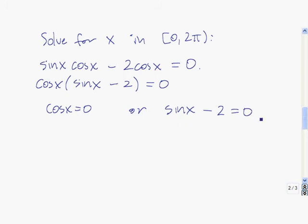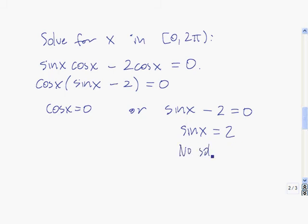The only way that this can be 0 is if cosine of x is 0, or sine of x minus 2 equals 0. We want to isolate the sine of x so it's similar to the problems we were just solving. There are no solutions to the sine of x minus 2 equals 0 piece because we know the highest value that sine of x can be is 1, so there's no value of x for which sine of x equals 2.